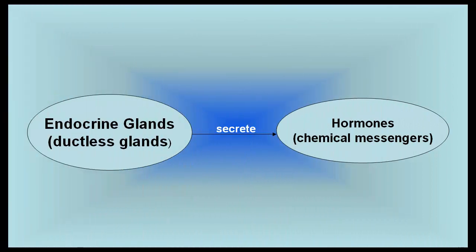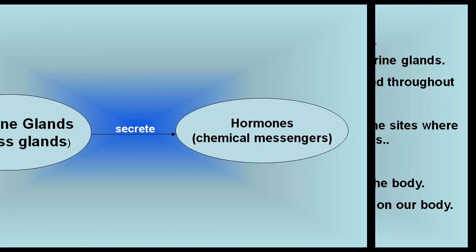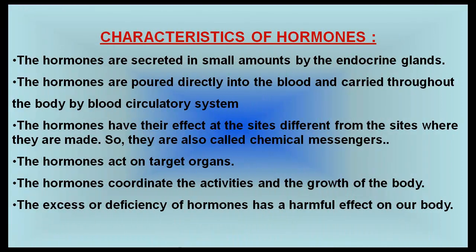Endocrine glands secrete hormones, which are also called chemical messengers. The hormones are secreted in small amounts and poured directly into the blood, carried throughout the body by the blood circulatory system. The hormones have their effect at sites different from where they are made, which is why they are called chemical messengers. The hormones act on target organs and coordinate the activities and growth of the body. Excess or deficiency of hormones has a harmful effect on our body.